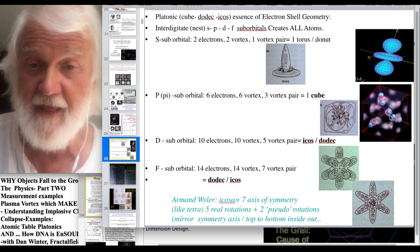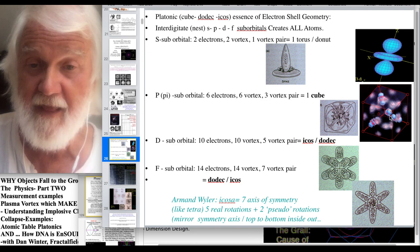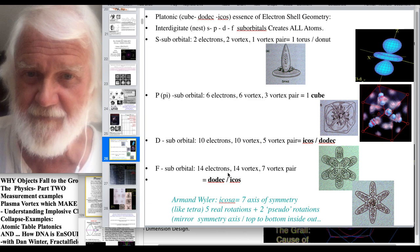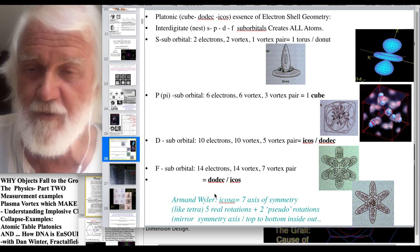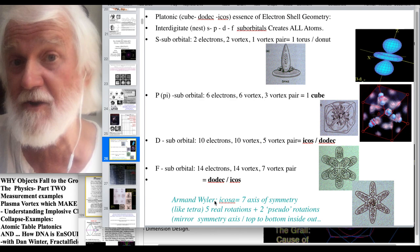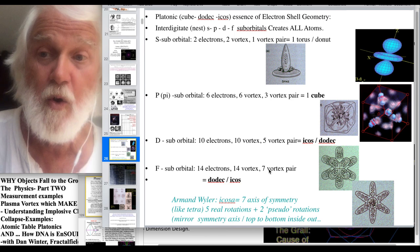But the fun part now is the D and F suborbitals are 10, 14 electrons. Remember, the SPDF is 2, 6, 10, 14 electrons, which as pairs means 1, 3, 5, 7 vortex pairs. Or 1, 3, 5, 7 spin symmetry pairs.